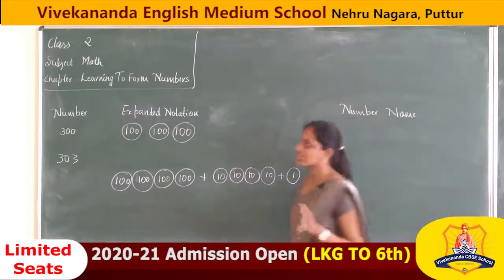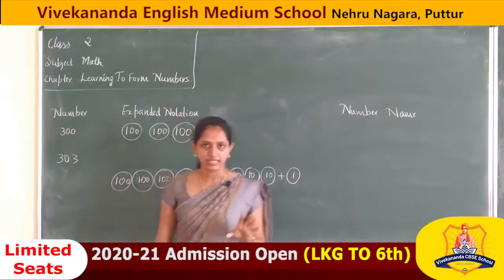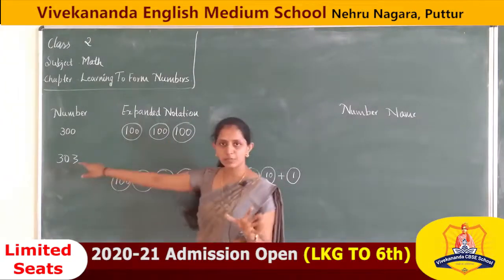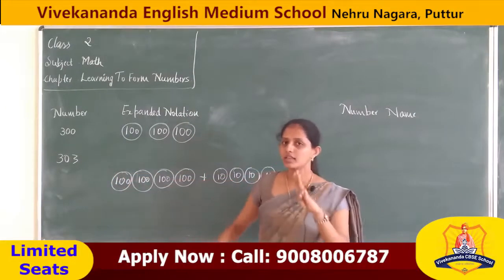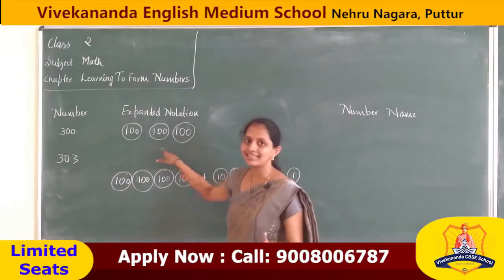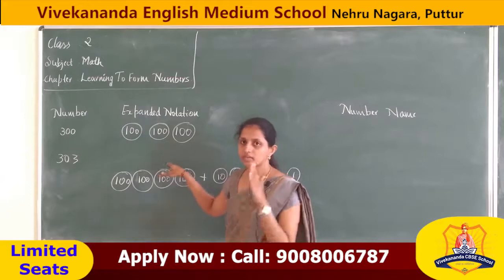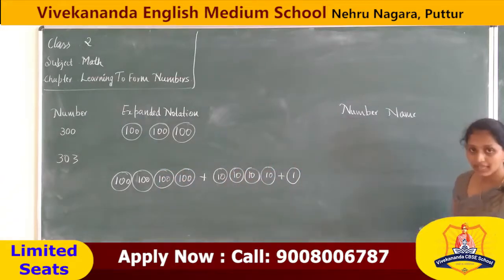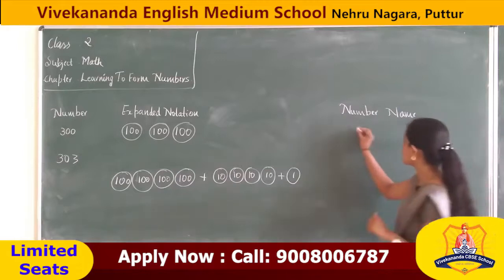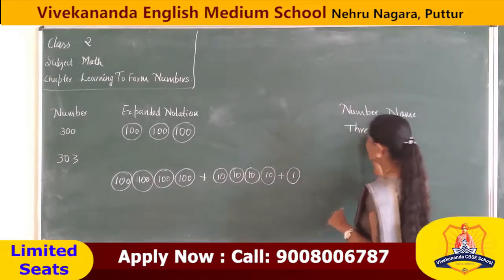The first number is 300. The expansion form of 300 is 300. 300 means 100 plus 100 plus 100, that is 300. What do I have to write as the number name? Three hundred.